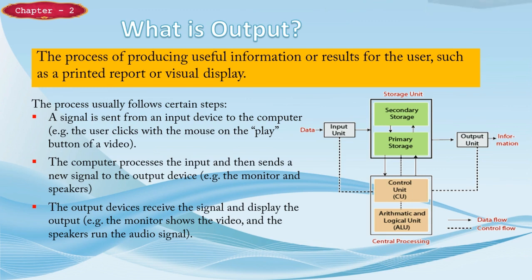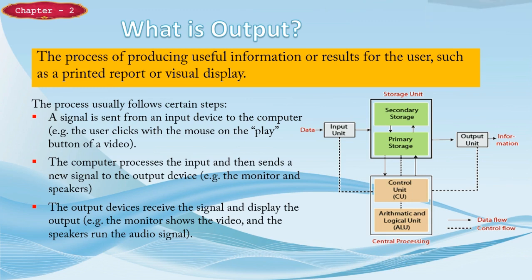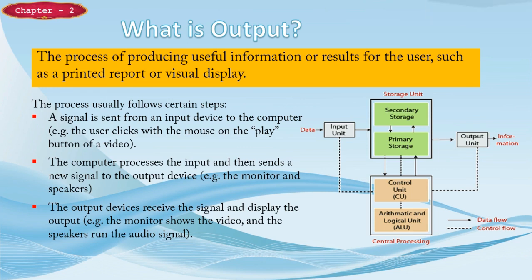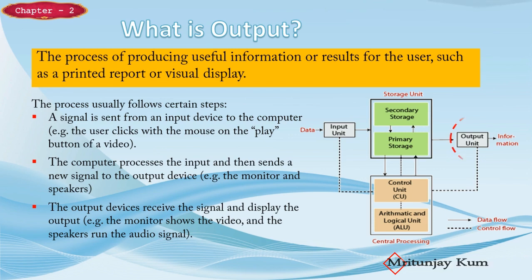You can see in this diagram there is data that goes through the input unit to the CPU, that is the central processing unit, and after the process it goes to the output unit, which displays it in the form of information.